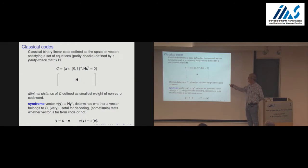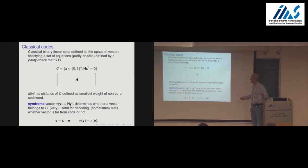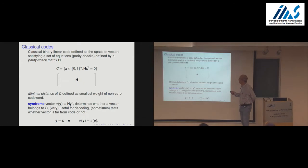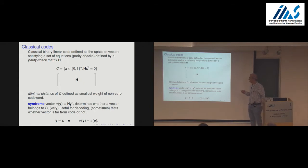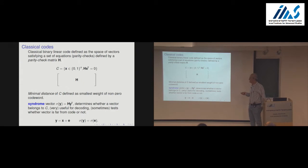Think of the code as defined by a bunch of equations like this. Two objects we want to keep in mind: the syndrome function, which is very important. It takes any vector in the Hamming space from {0,1}^n and multiplies it by the parity check matrix H. The syndrome tells you, for any vector, which equations are satisfied and which are not. So we can think of the code as the vectors that have zero syndrome. Later we'll think of the syndrome function as a boundary in a more topological context.